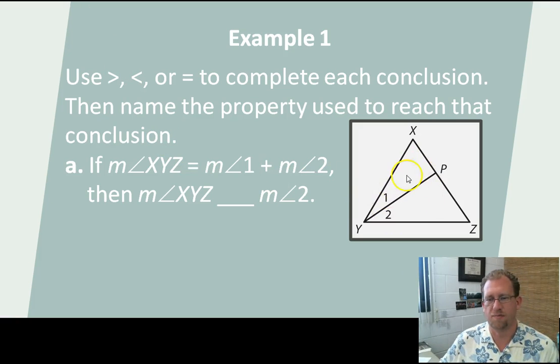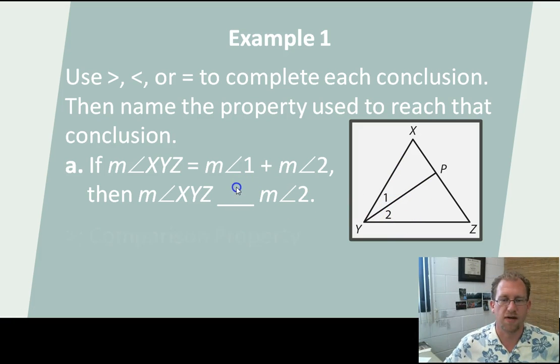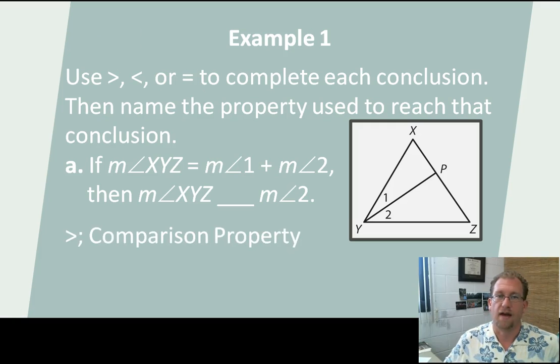Let's compare some things on this figure and determine if we should use the equal sign, the less than or greater than symbol to determine the relationship. So I have angle XYZ, and I've got angle 1 and angle 2 that together make angle XYZ. What then is the relationship between XYZ and angle 2? Angle 2 is just part of XYZ. So according to the comparison postulate, I should say that XYZ is greater than angle 2, because you've got to add something to angle 2 to get to angle XYZ.